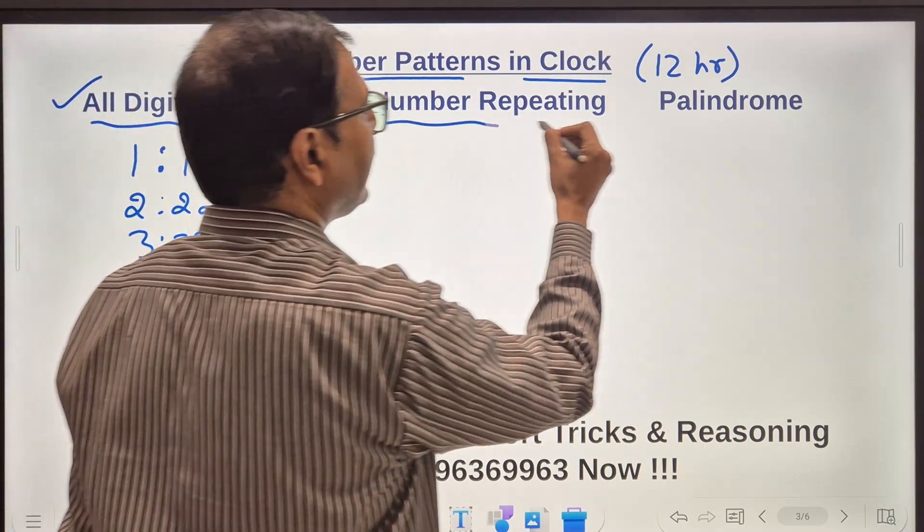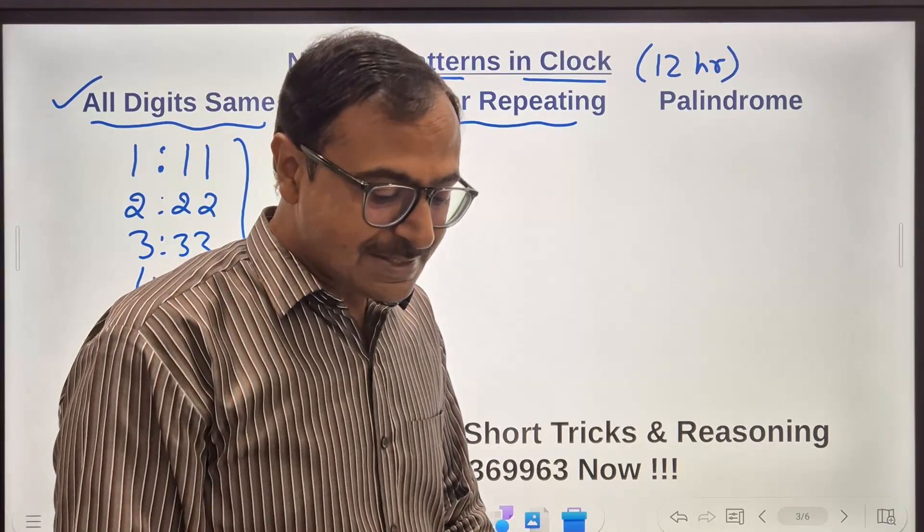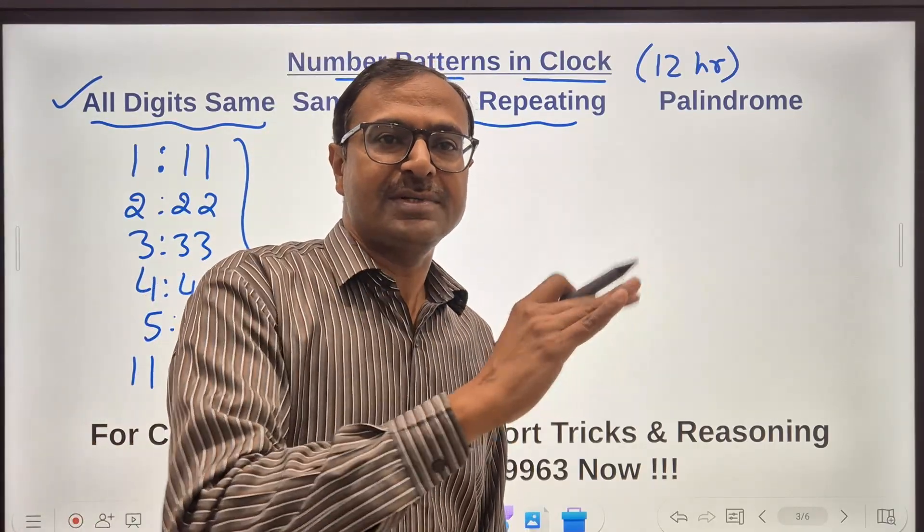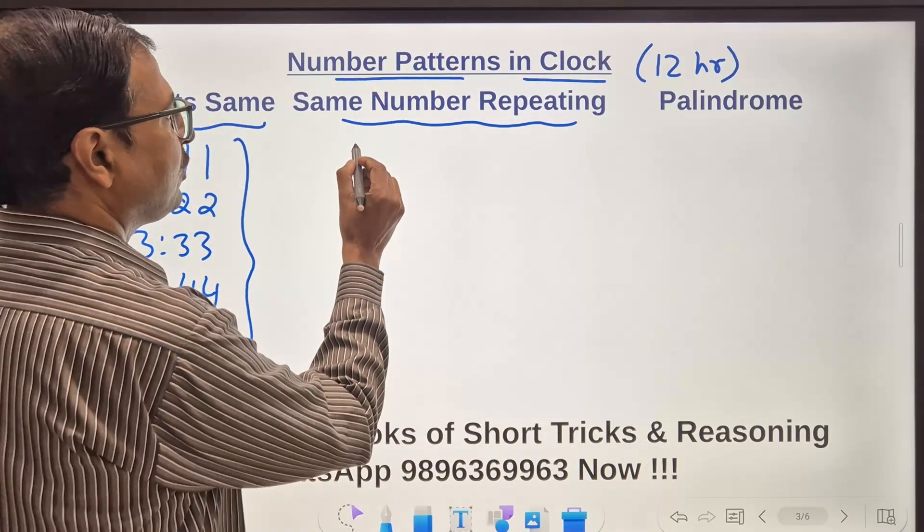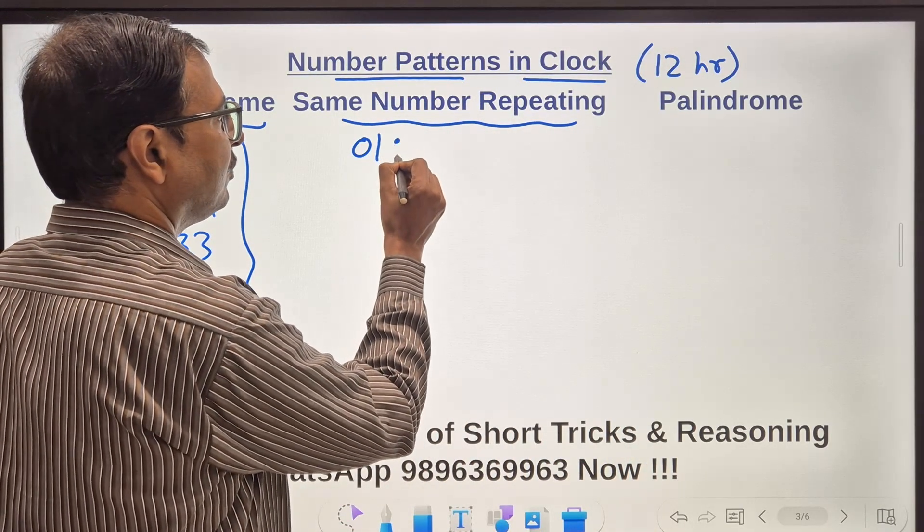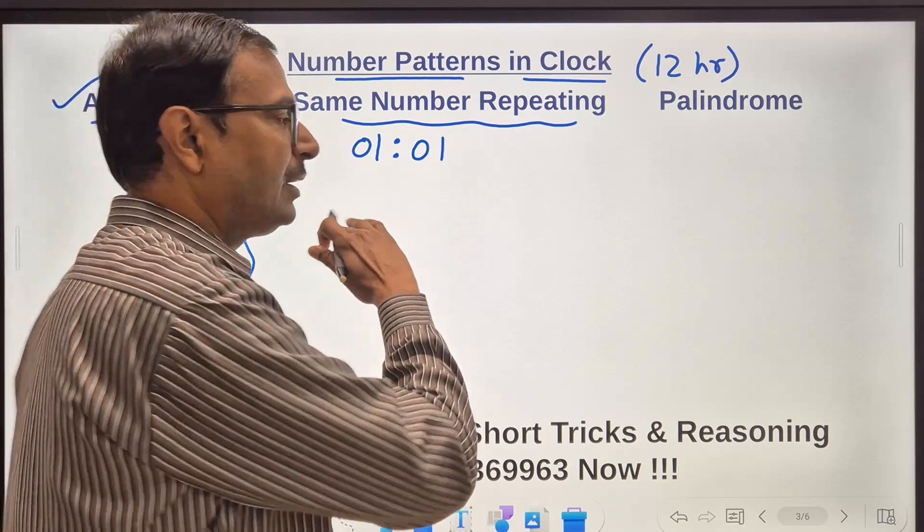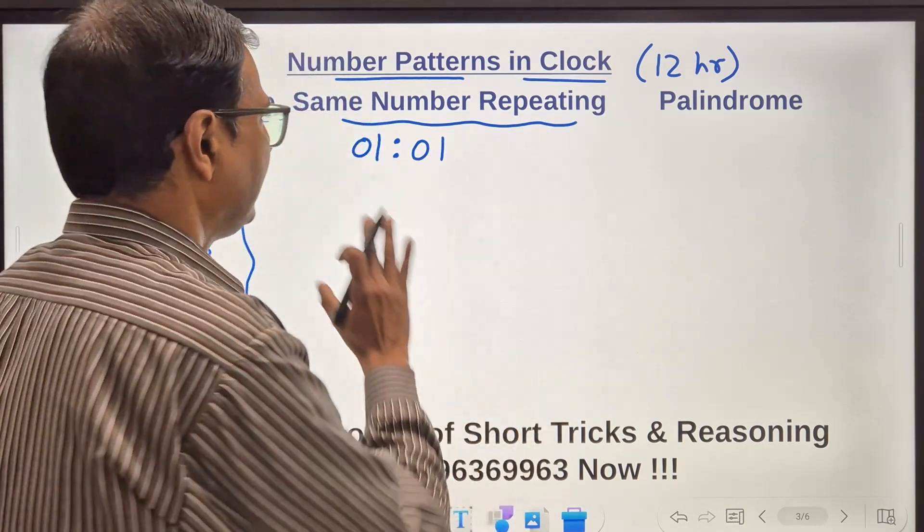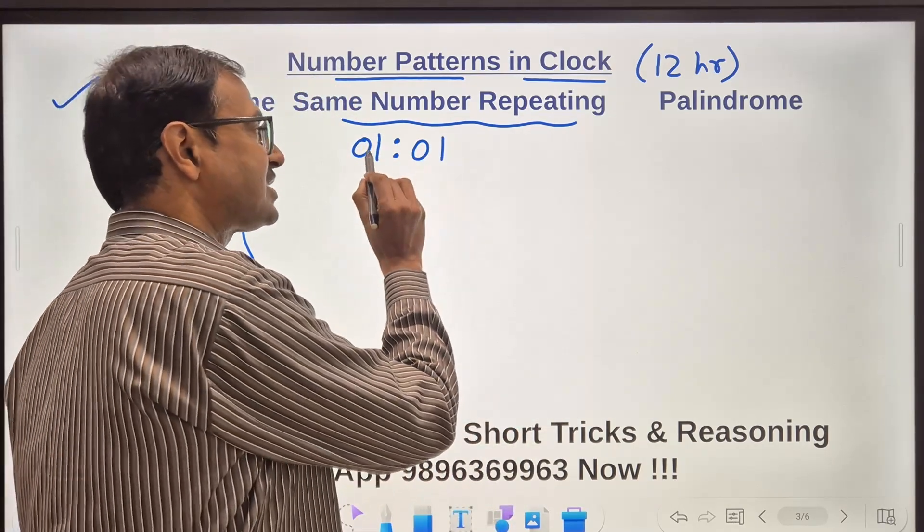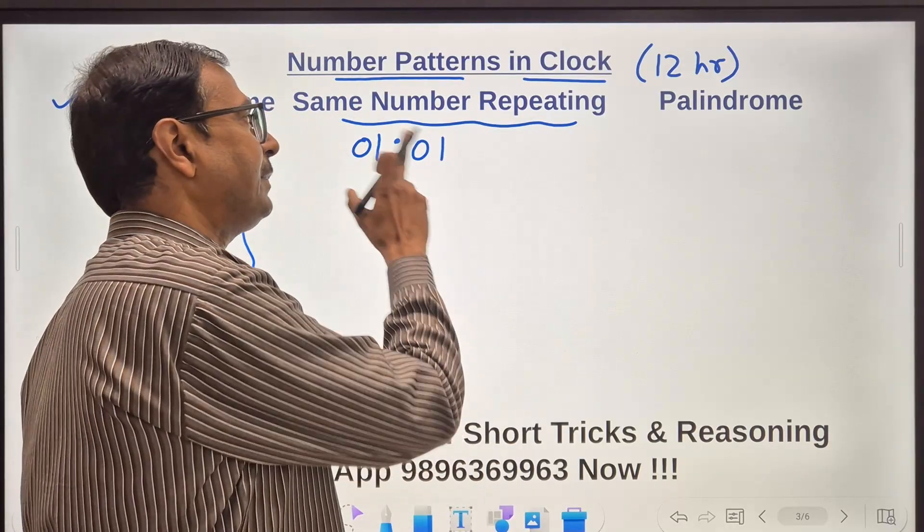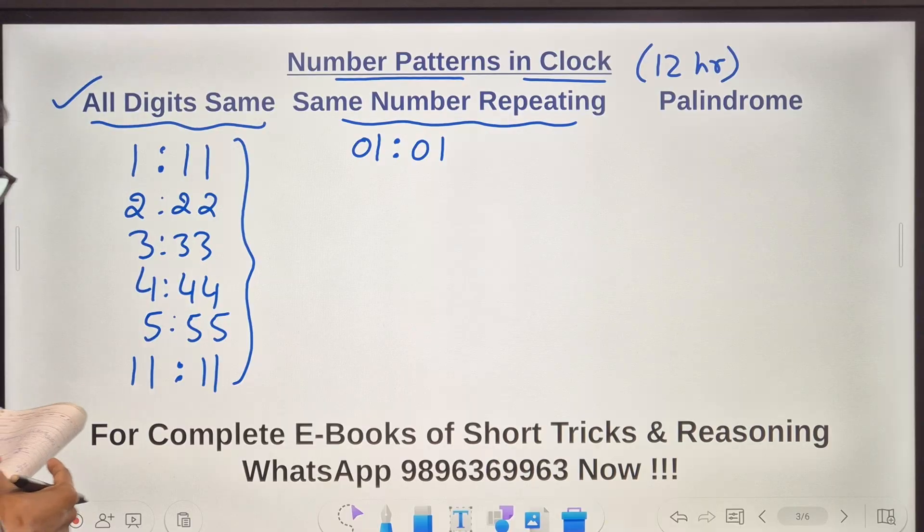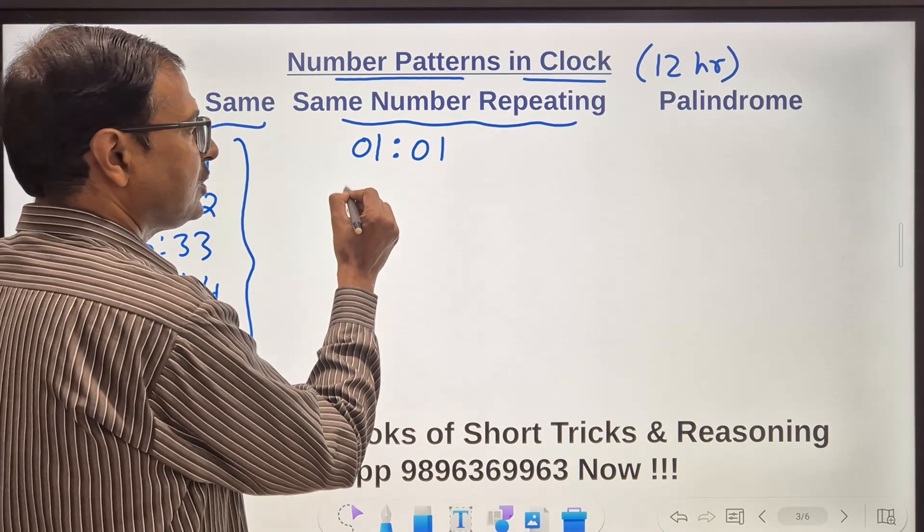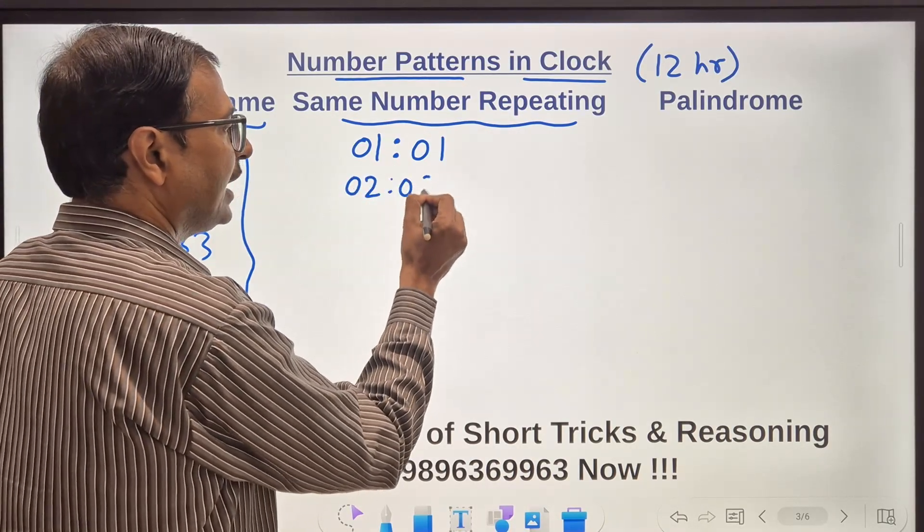Likewise same number repeating, that means whatever is the hours the same number is in the minutes like you have 01:01, that is 1 minute past 1 am or 1 minute past 1 pm. Likewise you can move on 02:02, 03:03, 04:04.